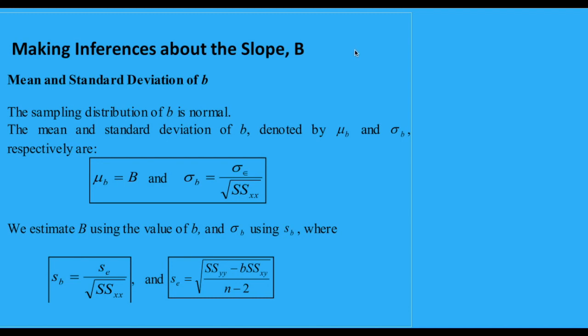So in this video, we will be making inferences about the slope or B. As all of you have already known, based on the previous chapters, there are two ways to make inferences about a parameter. The first one is using estimation. And the second one is by testing the hypothesis.